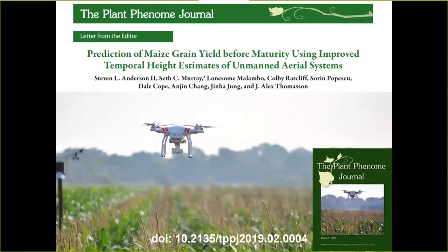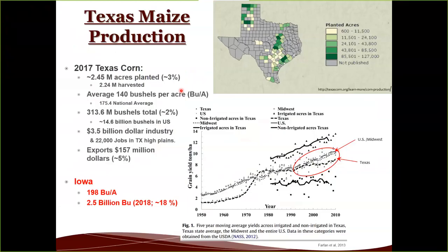To get started, I'll introduce maize production in Texas. As of 2017, we plant about 2.45 million acres of corn in Texas and average about 140 bushels per acre — roughly 314 million bushels total for the state. In the Texas Panhandle alone, it's about a $3.5 billion industry providing about 22,000 jobs, and we export about $160 million worth of maize.